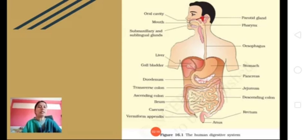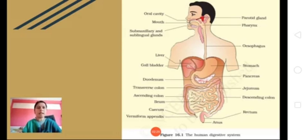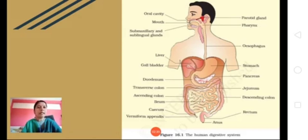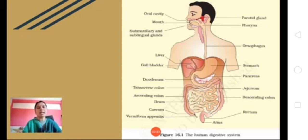This covers the parts of the alimentary canal. Along with the salivary glands present inside the mouth, there are two other large glands. One is the liver, which is the largest gland of our digestive system, and just below the stomach you can see the pancreas, which is the second largest gland here.